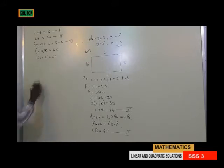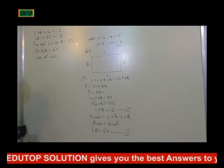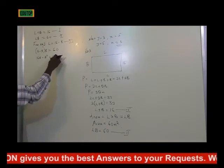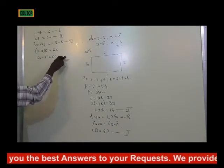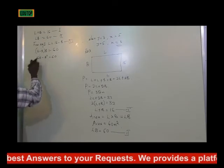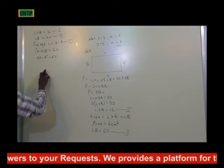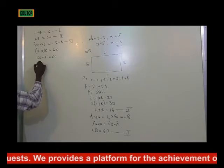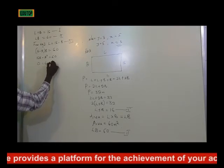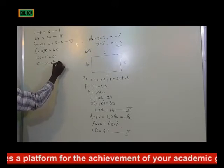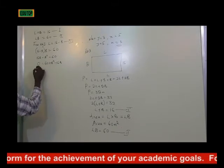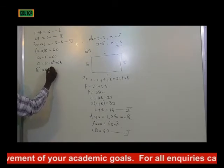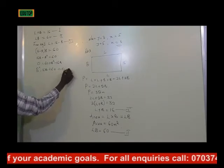I want to restructure this so that it looks like a proper quadratic equation. By doing that, I transfer terms to the other side such that the left-hand side will be 0. So I have 0 equals to 60 plus b squared minus 16b, which can also be written as b squared minus 16b plus 60 equals to 0.